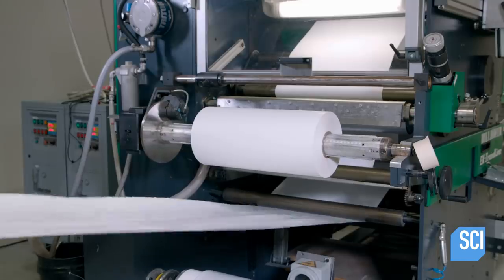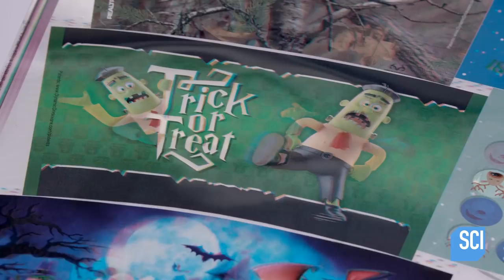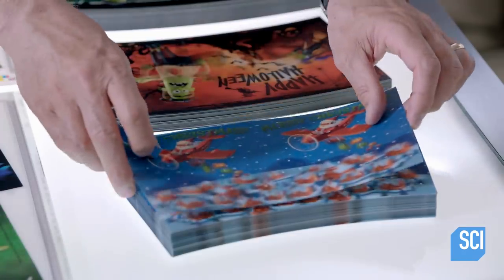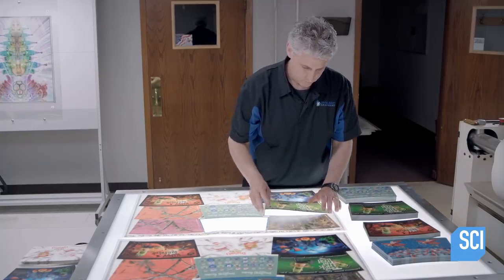Next, the sheets are cut into cup-sized labels, placed on an illuminated table, and inspected for any visual flaws. Once approved, the designer clears the labels to be formed to plastic cups.